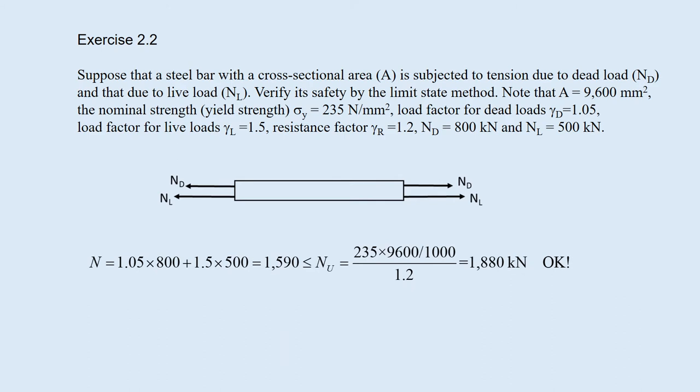Remember, N is calculated by multiplying the design force by the load factor. In this case, you have Nd and Nl with different load factors. So, N becomes 1590. This is within the ultimate strength NU of 1880 kilonewton, which is the yield strength divided by the resistance factor 1.2. So, it's okay to satisfy the safety.